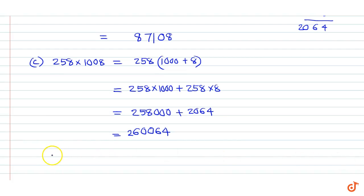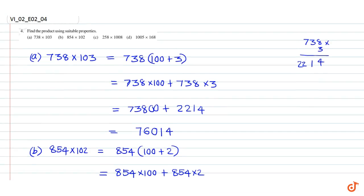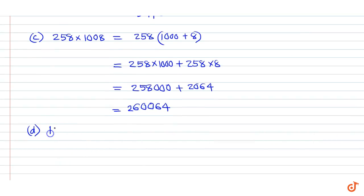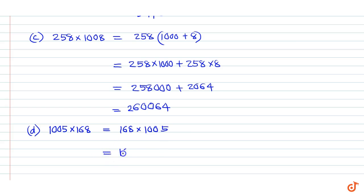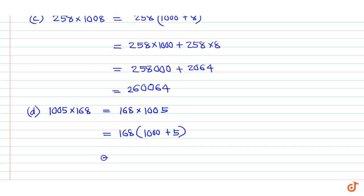Part D: 1005 into 168. Using commutative property we can write 168 into 1005. This is equal to 168 into 1000 plus 5. Using distributive property we can write 168000 plus 168 into 5.